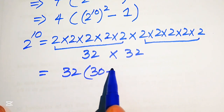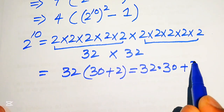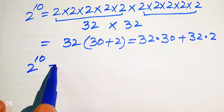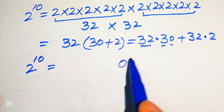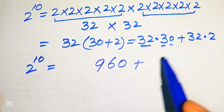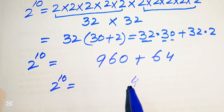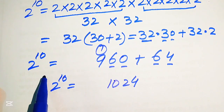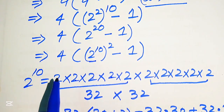Now we need to multiply 32 by 32. We write 32 as 30 plus 2, then multiply 32 on both terms to get 32 times 30 plus 32 times 2. Carrying out the multiplication: 0 plus 4 is 4, 6 plus 6 is 12 — write 2 carry 1 — 9 plus 1 becomes 10. Therefore 2 to the power of 10 equals 1024.